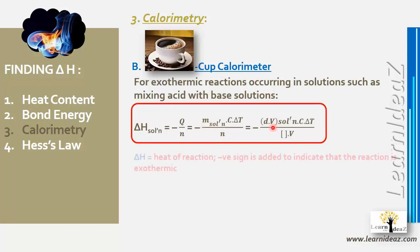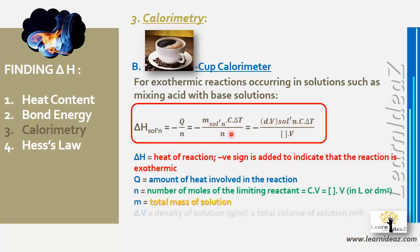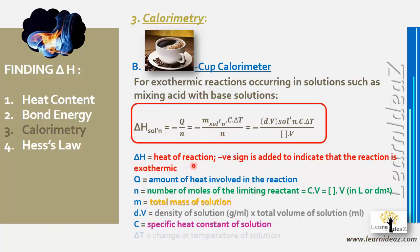So delta h = −(density × volume × c × delta t) / n, where n is the number of moles of the limiting reactant. We can find n from n = c × V (concentration times volume in liters). The volume for density calculations should be in milliliters, while the volume for moles should be in liters.